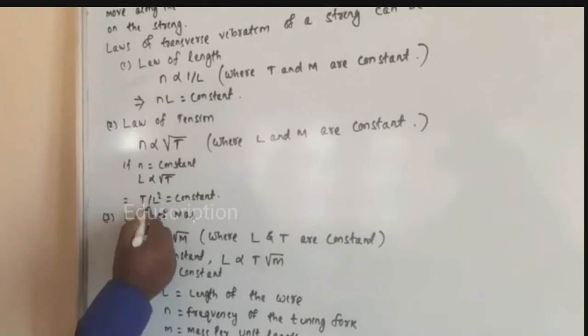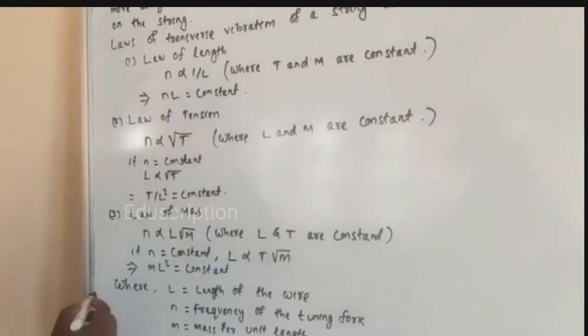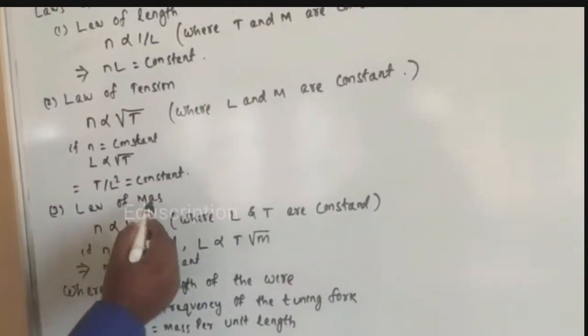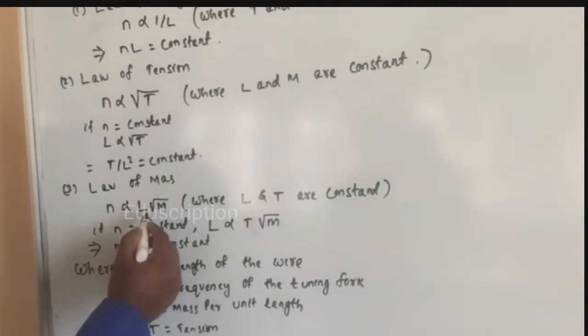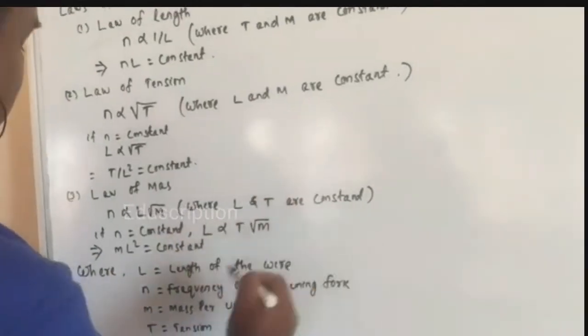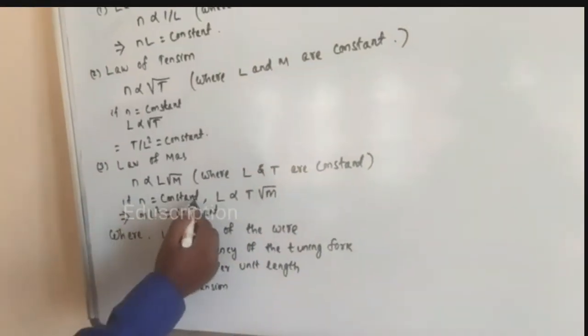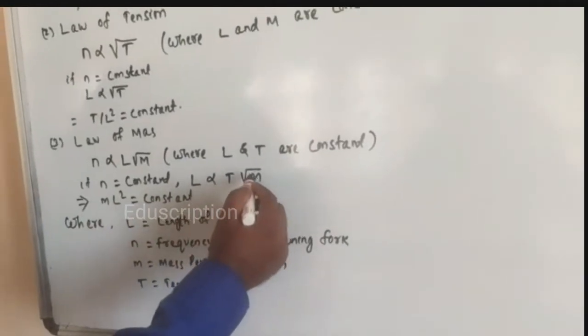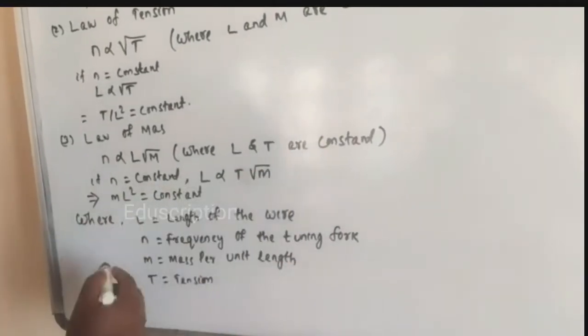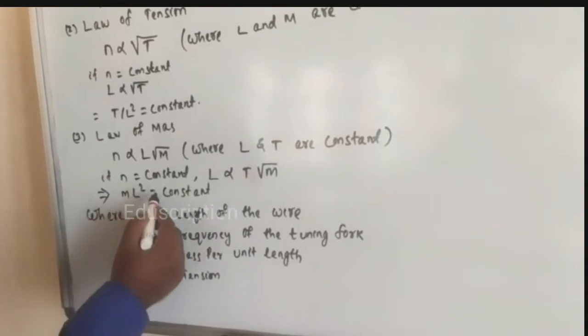Then n is directly proportional to square root of T over M, where L and T are constant. If n equal to constant, then n is directly proportional to square root of T over M. That implies M L square equal to constant.